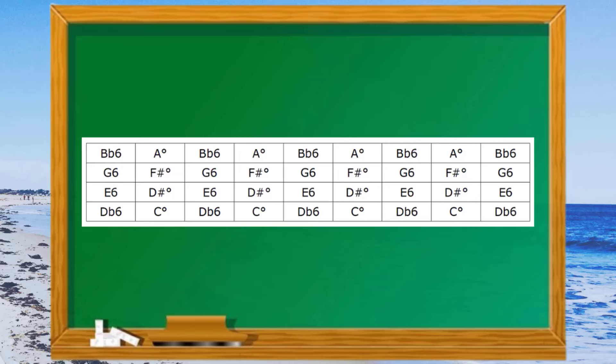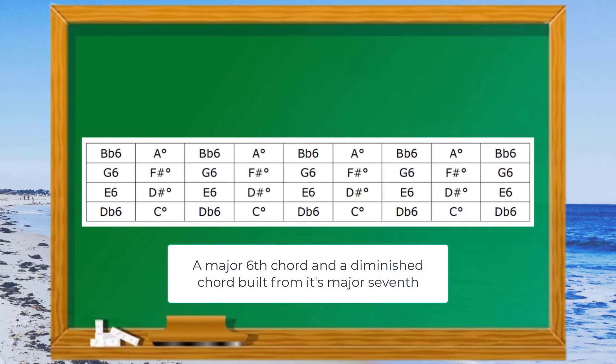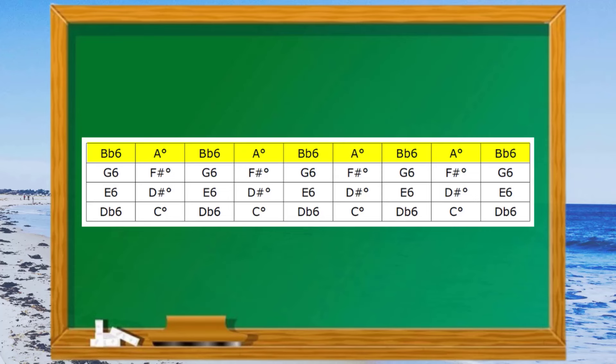Now if we go right back to those early lessons on chord melody guitar where we discovered that when we harmonize a major 6 diminished scale the scale only produces two chords: a major 6 chord and a diminished chord built from its major 7th. Therefore when we're playing the B flat major 6 diminished scale the way I'm naming the chords is B flat 6th and A diminished, A being the major 7th of the B flat major 6 diminished scale.